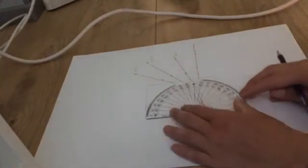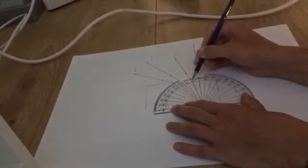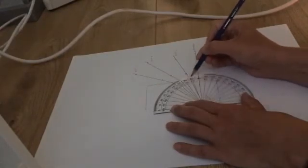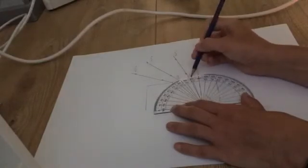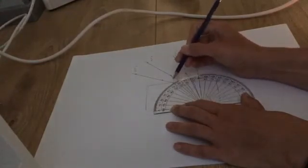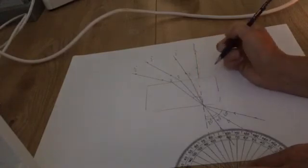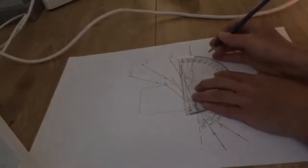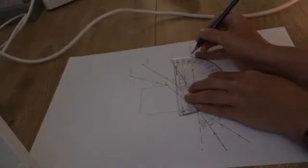Using my protractor, I can then measure the angles of refraction at that first surface. And then the second refraction, the one that goes from the glass to the air. But before I can measure any angles, I need to draw in the normal line each time, because it's the normal line that I'm measuring to.